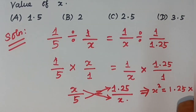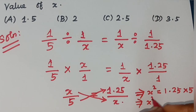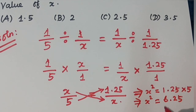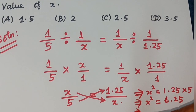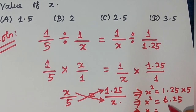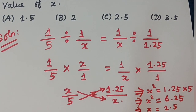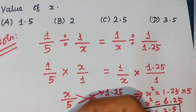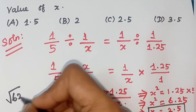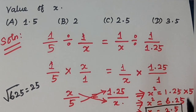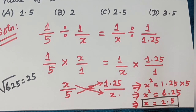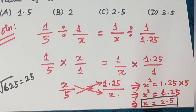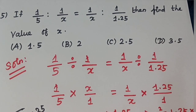X² = 1.25 × 5 = 6.25. Taking the square root: X = √6.25 = 2.5. The final answer is X = 2.5, option C.